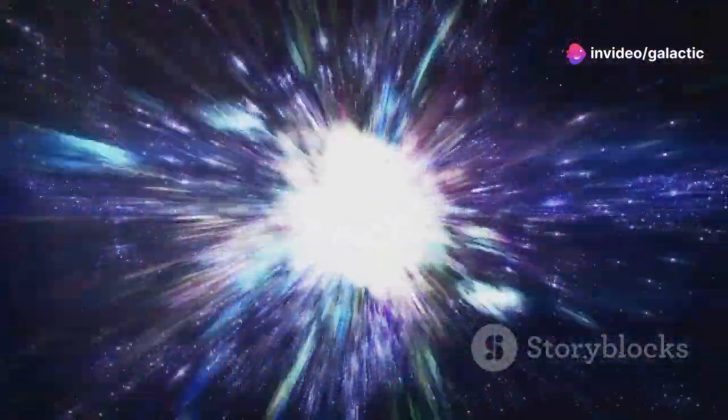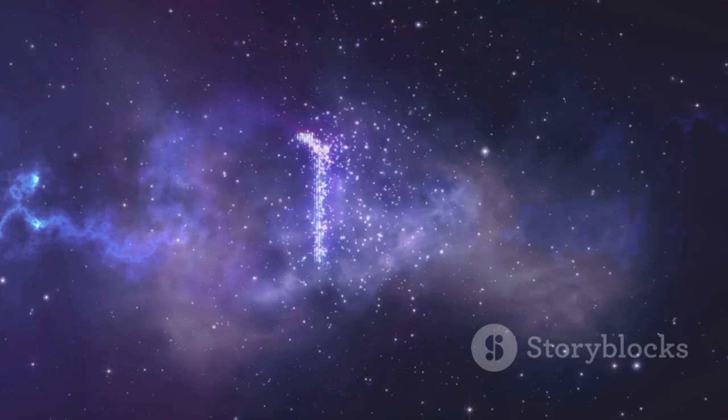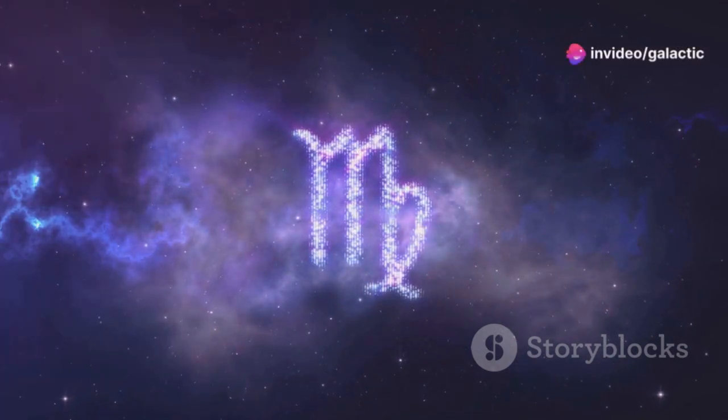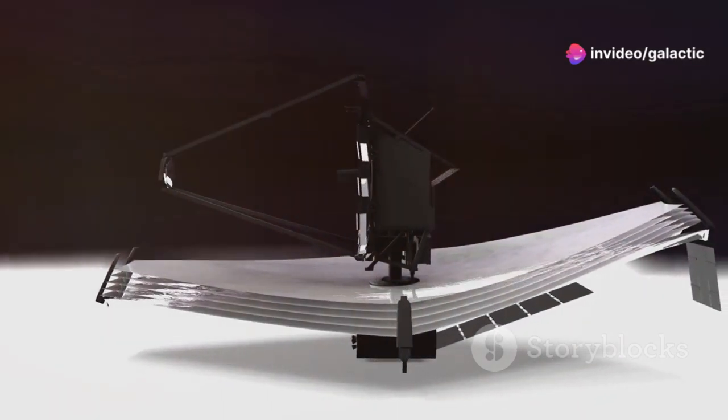The Big Bang theory posits that the universe began from an extremely hot, dense state, and has been expanding and cooling ever since. According to this model, the first stars and galaxies should have formed hundreds of millions of years after the Big Bang. The JWST's observations, however, suggest that this process might have occurred much earlier.